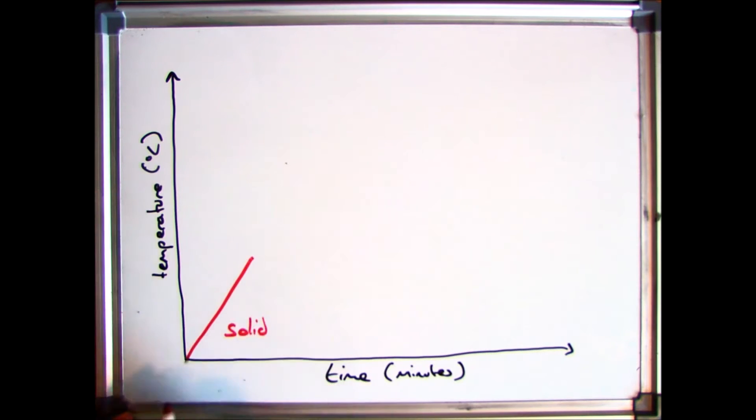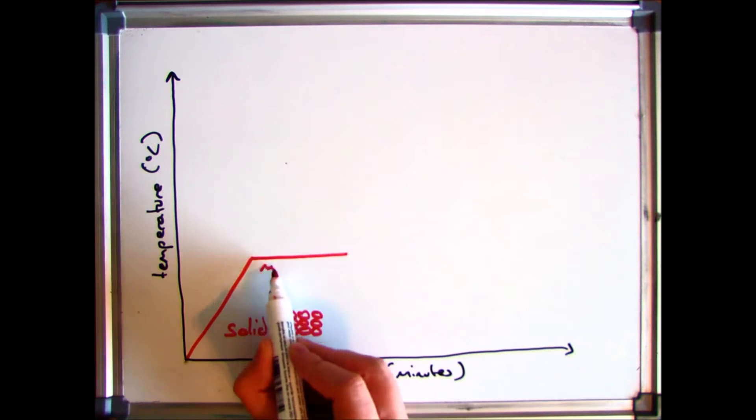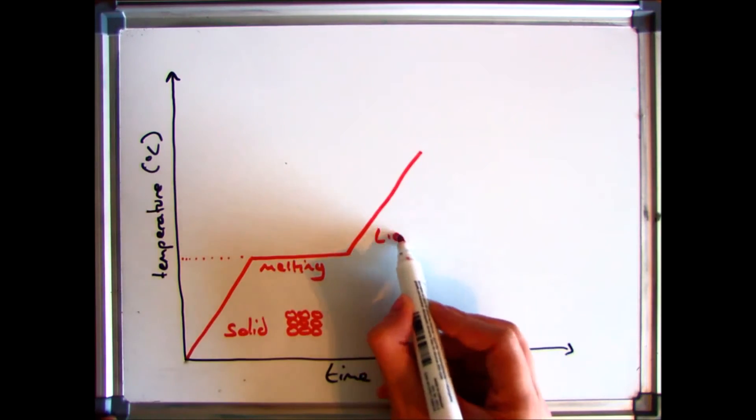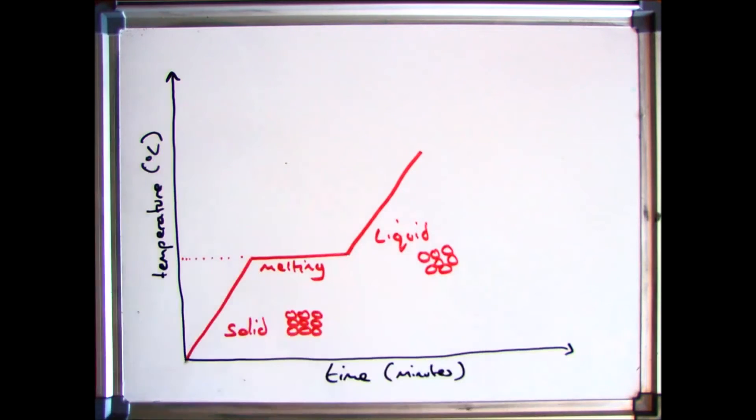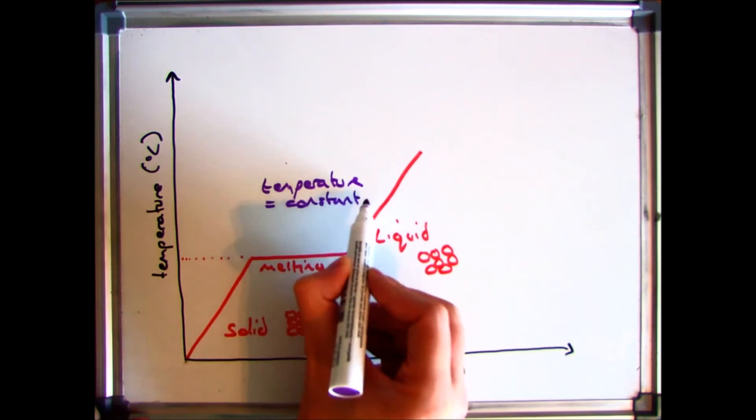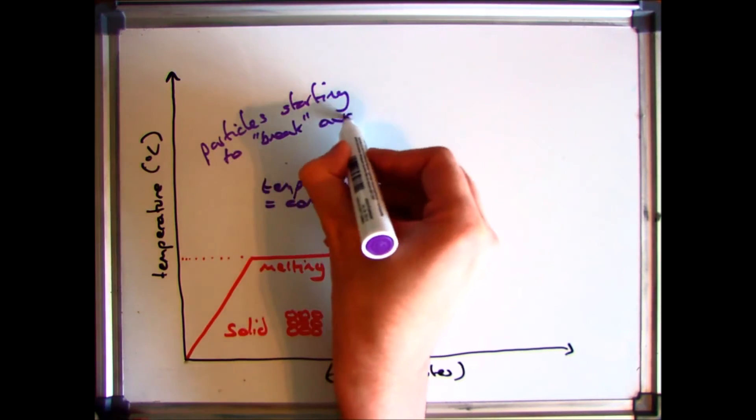So if you take a solid and start to heat it up, it will turn, obviously, into a liquid. But the temperature will keep on increasing until it gets to a certain point where it won't increase anymore. Here, the energy that would have been used to heat up the solid is now being used to break the solid away from that fixed position so the particles can start to move, turning it into a liquid.